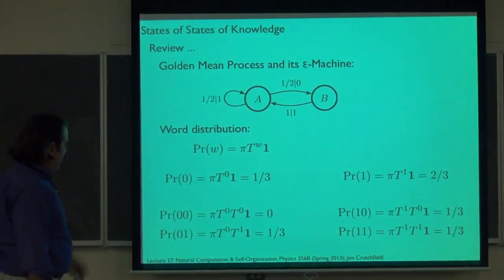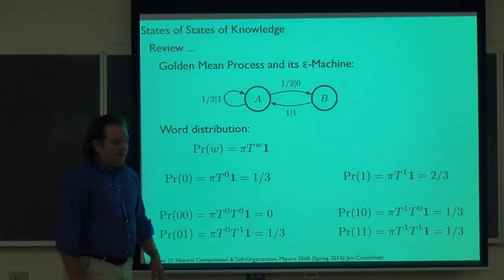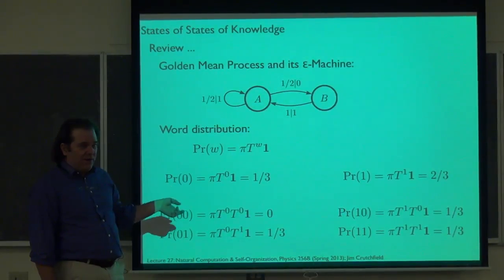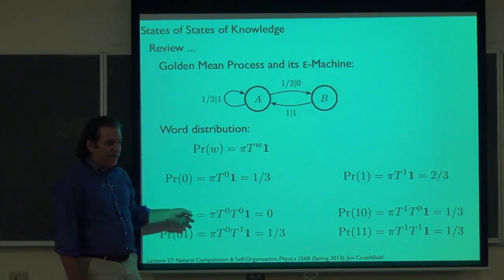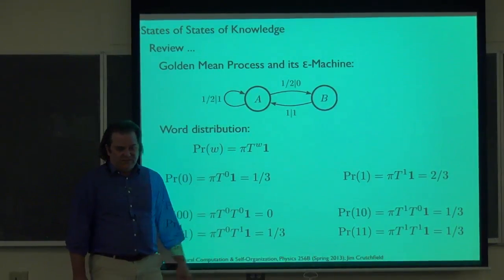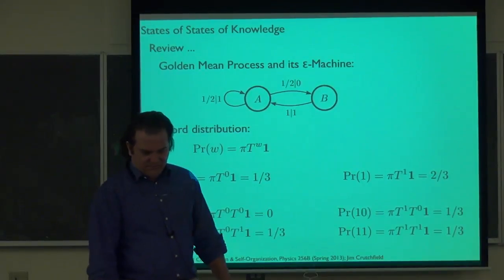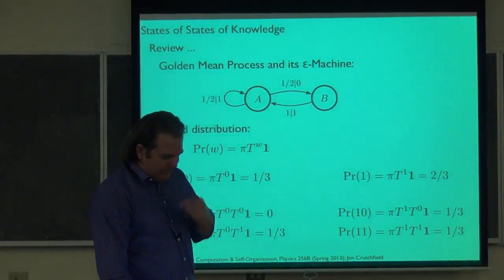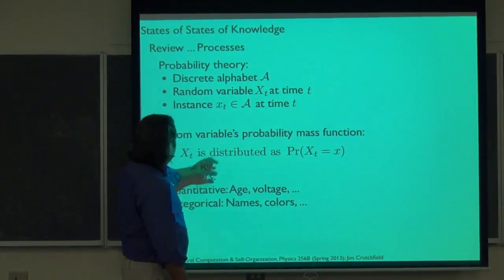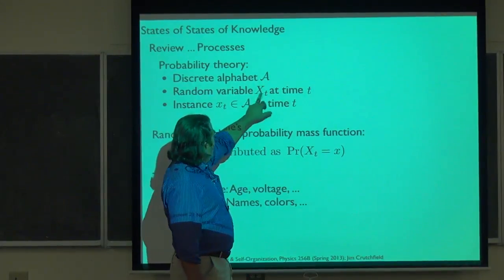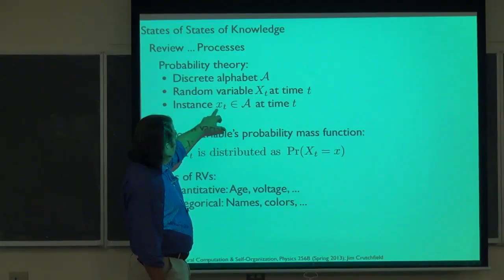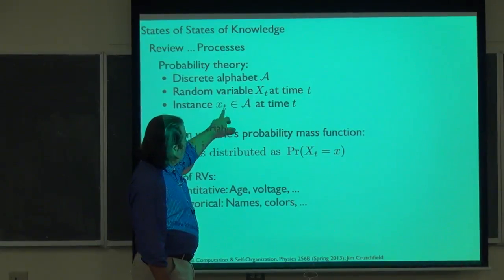If I wanted to calculate the probability of all length-ten words, I'd have 2^10 or about a thousand of these calculations to do — quite tedious. So: notation for probability theory. We have a discrete alphabet, a random variable X_T at time T. The instance of that is some value in the alphabet. The random variable X_T is distributed according to its distribution — we'll use tilde notation: random variable distributed as this distribution.